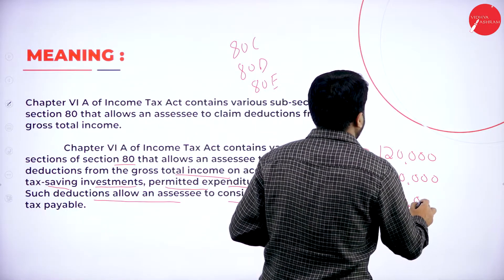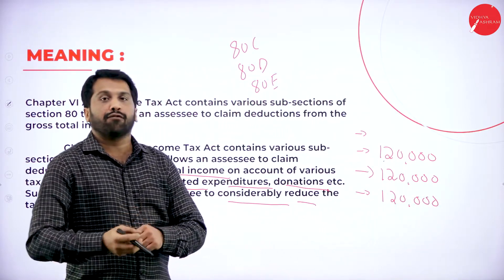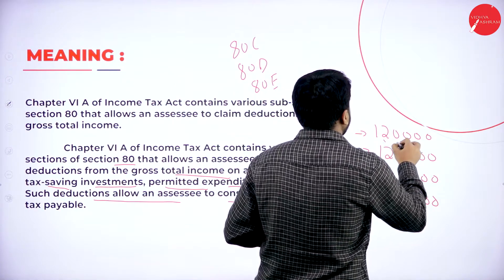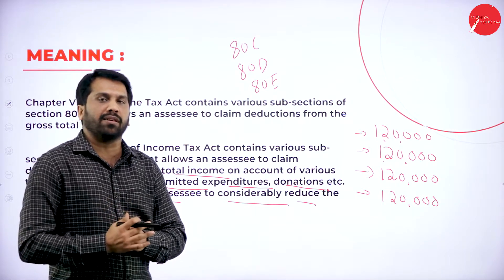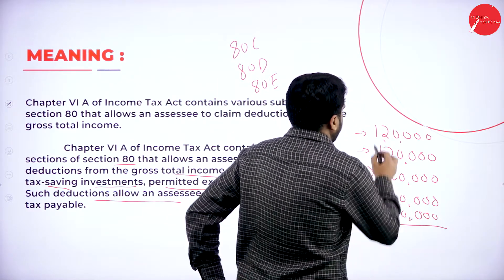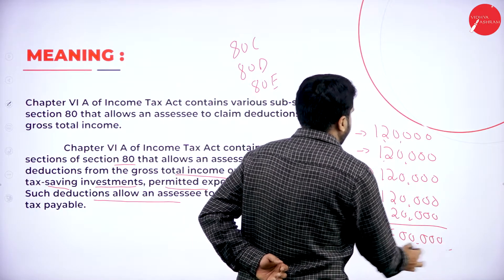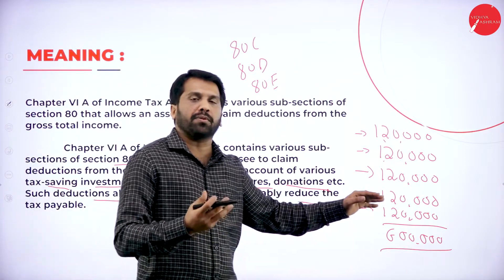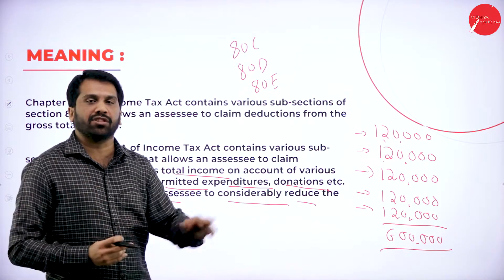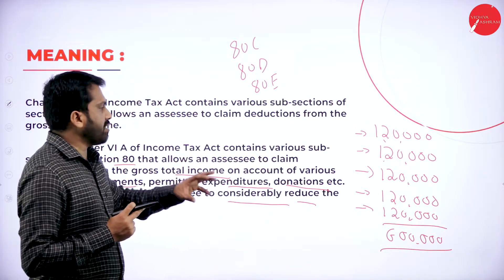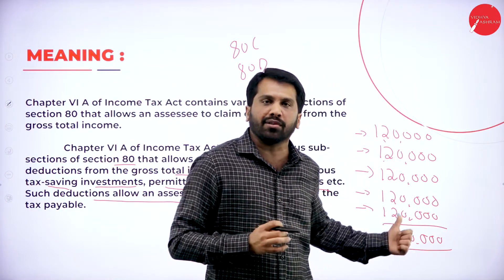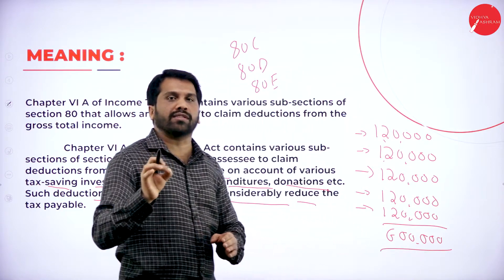I have some deposit in the bank, from which I am getting interest of around 1,20,000. Along with that, I have some capital gain and other sources — all 5 heads. Total it will be 6,00,000 as your income. You are supposed to pay tax on 6,00,000 — up to 2,50,000 it is exempted, and above 2,50,000 it is 5% up to 5,00,000. But we have the concept called deduction.